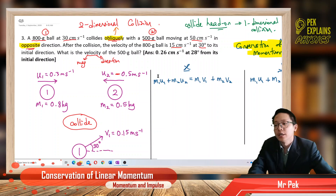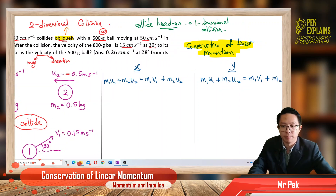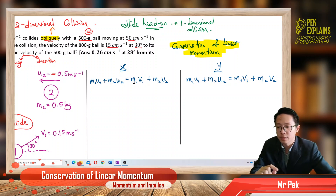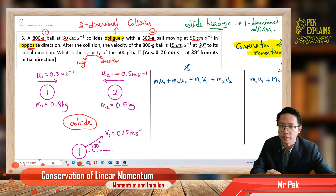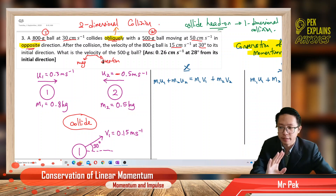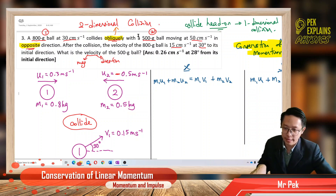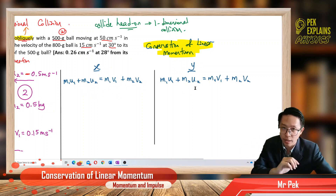For collision, we always use the conservation of linear momentum — the principle of conservation of linear momentum — because no matter whether it's elastic or inelastic collision, the momentum is always conserved. Since there is a 30-degree angle and this is an oblique collision, it is a two-dimensional collision. For a vector in two dimensions, you need to break it into x and y components.